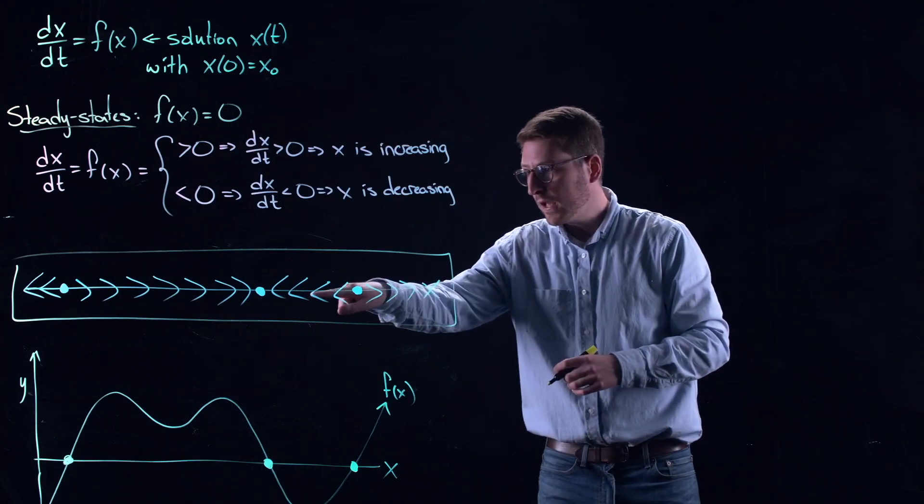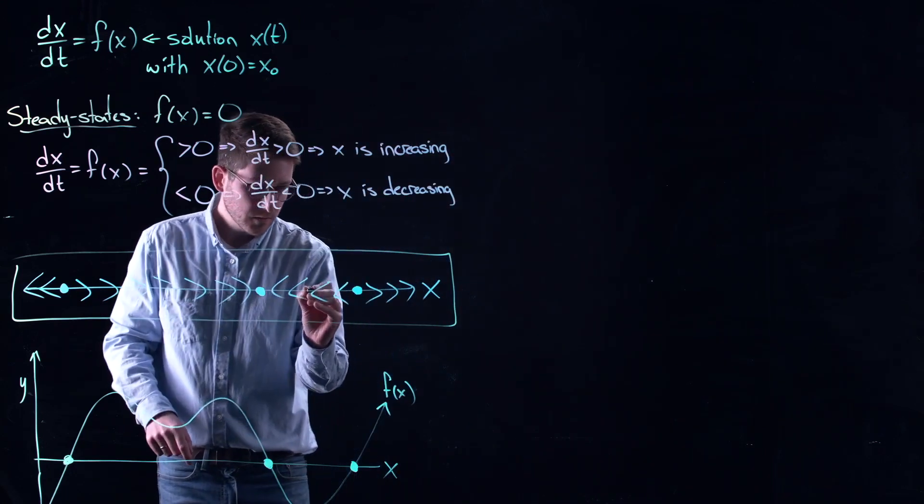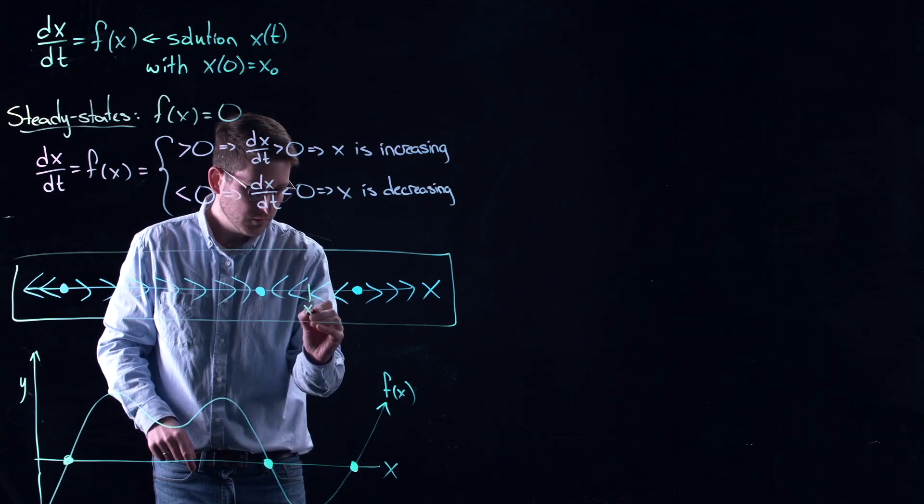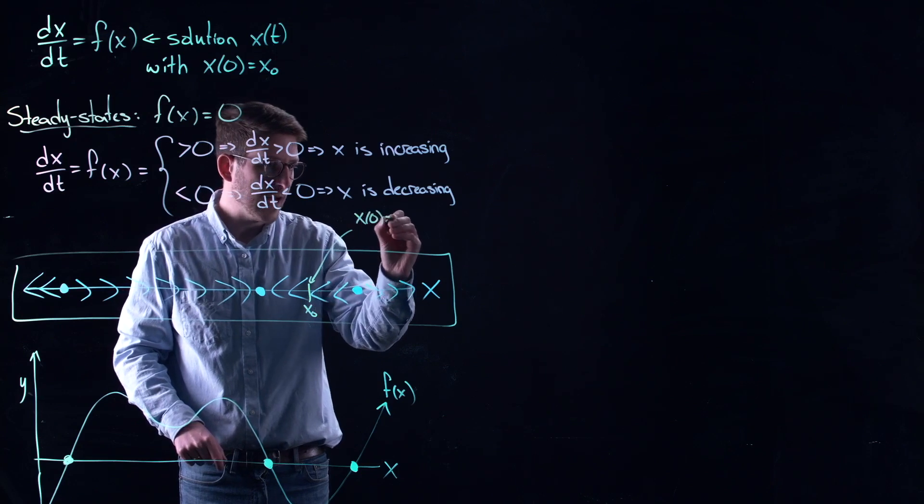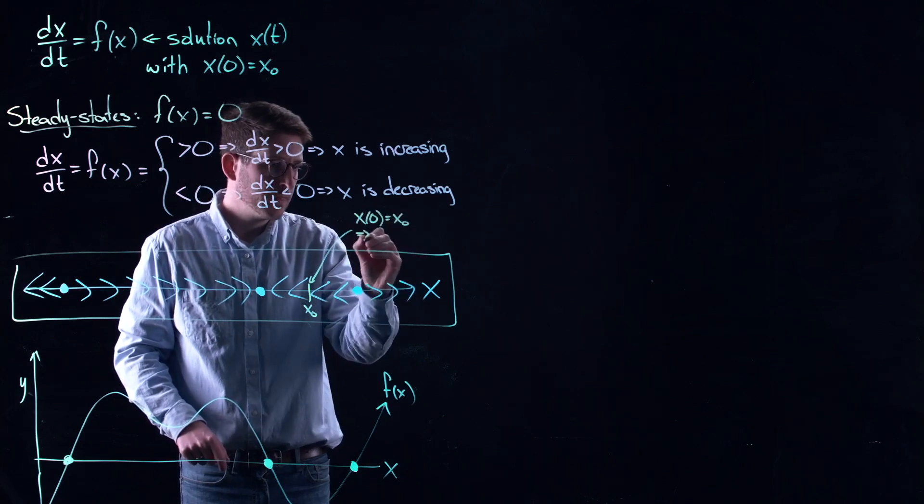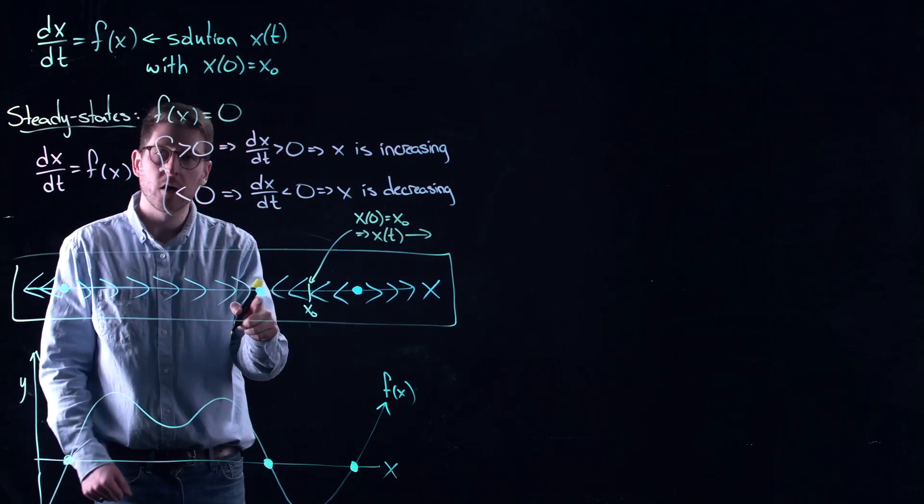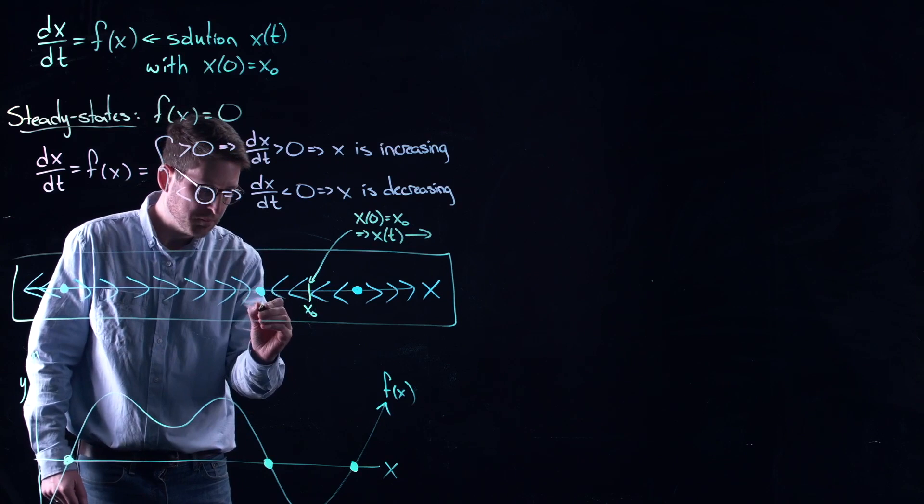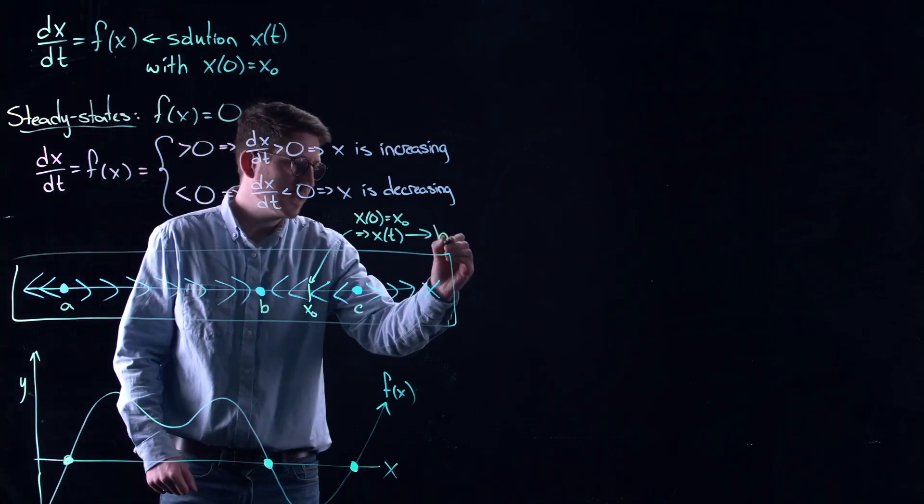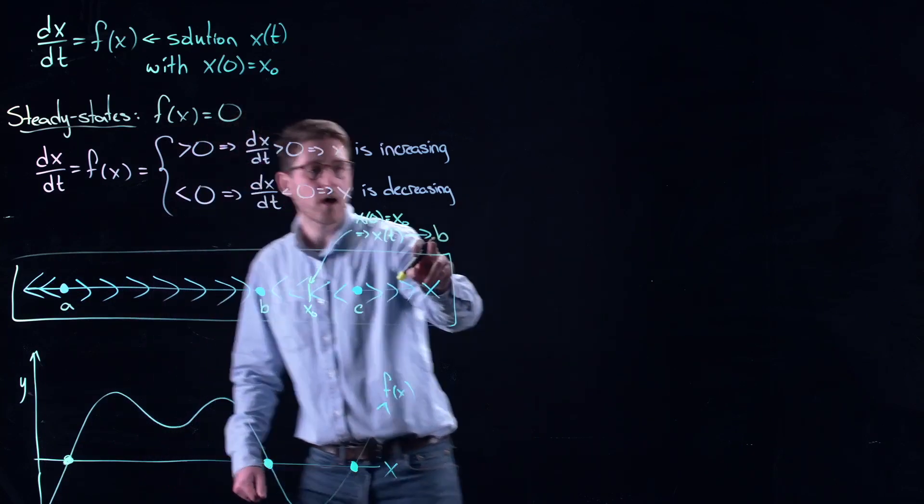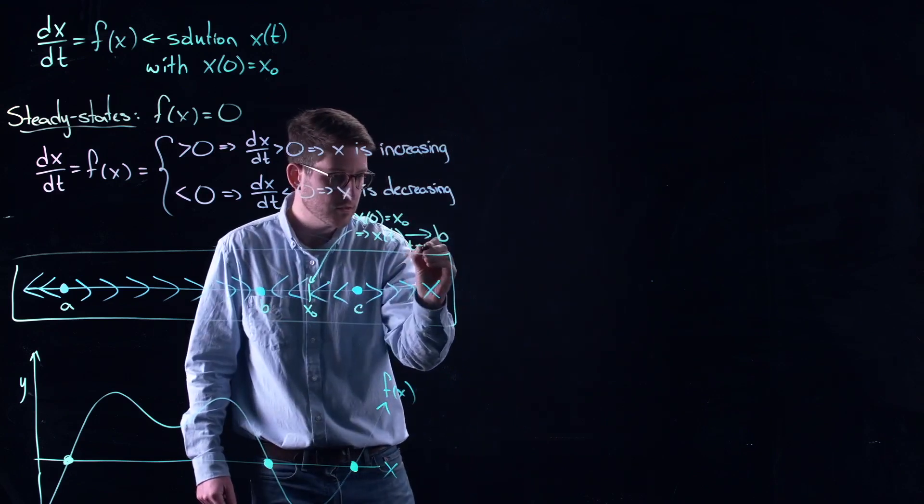So what this says, it says go left until you can't go left anymore. So if I started right here with x0, if x of 0 is that value, then x of t is converging. What should we call this? Let's call this b. So this might be a, b, c. It tells me that as time goes on, I am going to move towards b. So this is as t goes to infinity.